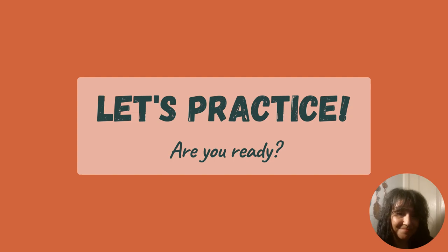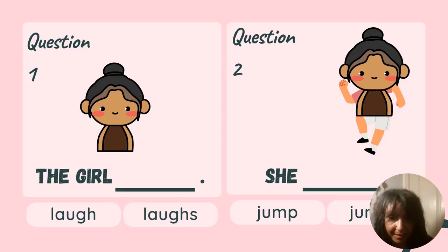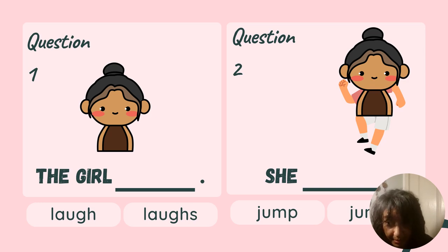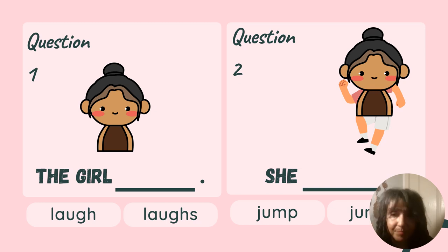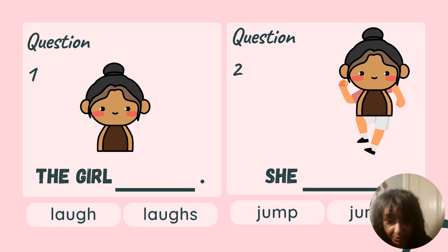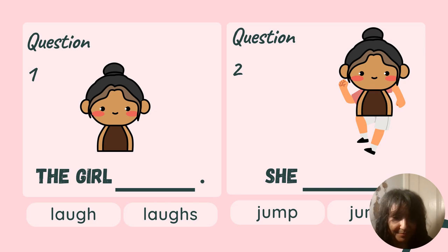Let's practice. Are you ready? Here's question one: 'The girl laugh' or 'the girl laughs'? That's correct — we would use the verb with S at the end because we're talking about one subject: girl. The next one: 'She jumps' or 'she jump'? Now here's a rule breaker for you — it's a pronoun. So we have 'she' and then use the S at the end for 'jumps.' Always looking out for rule breakers in the English language.